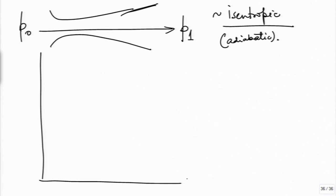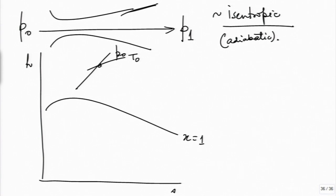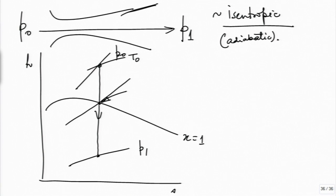If you take the H-S diagram, this is the dry saturated vapor line. We have our initial state P naught T naught, which is assumed superheated. The phenomenon of supersaturation occurs when superheated steam expands isentropically to P1. As the flow moves, this is the point where it intersects the X equal to one line, and here is the pressure at which it continues. But condensation does not exactly start here.